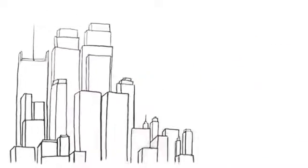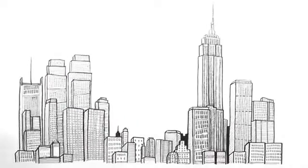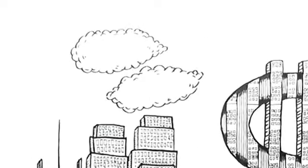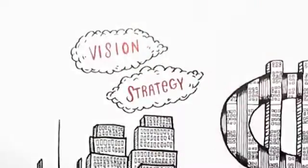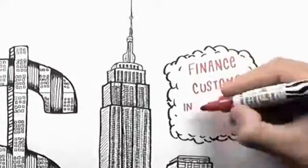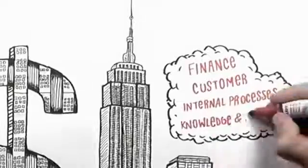They examined the most successful businesses across the world and found similarities in the way they were run. Each of the top performing businesses had a very clear vision and strategy that was managed across the key areas of finance, customer, internal processes, and knowledge and growth.